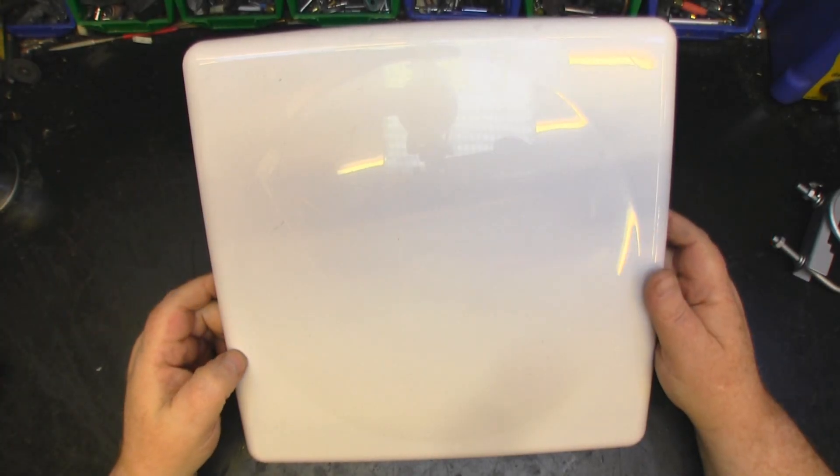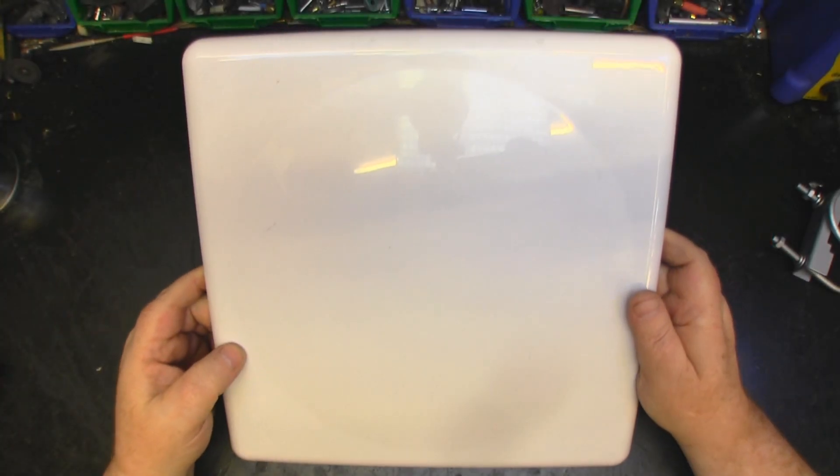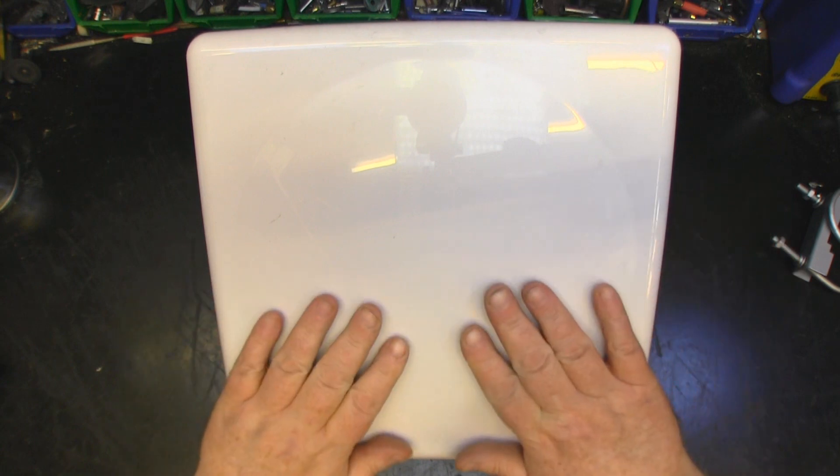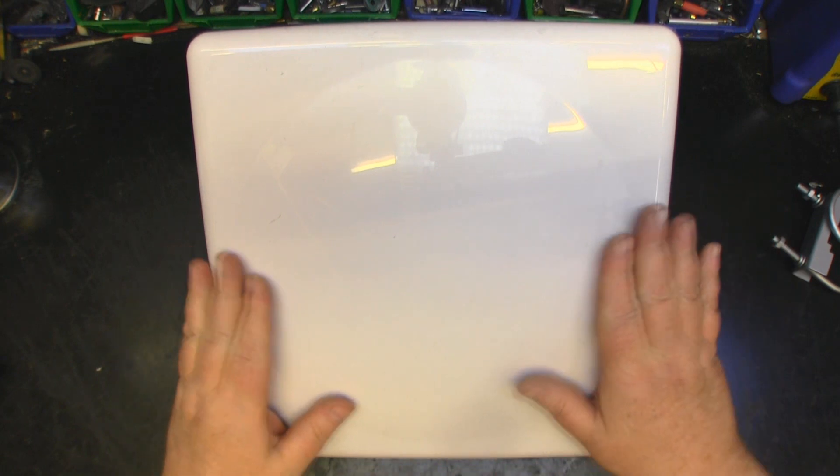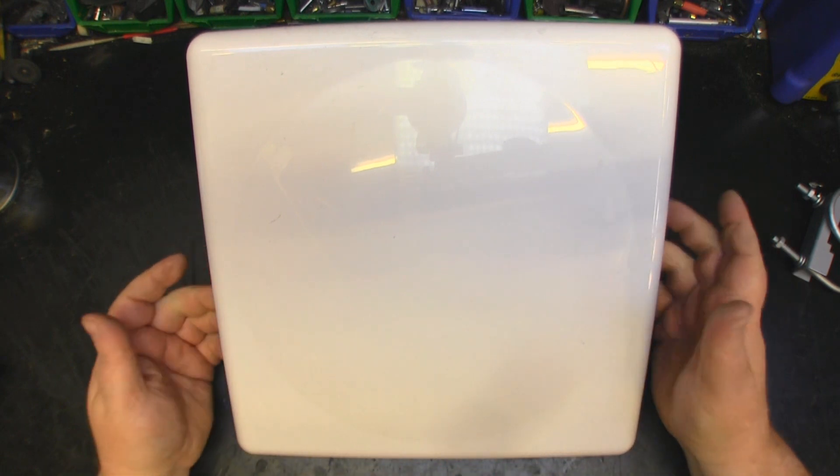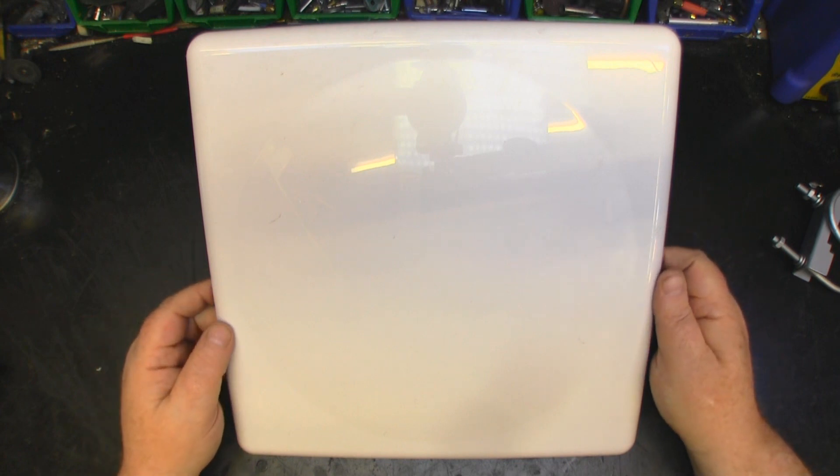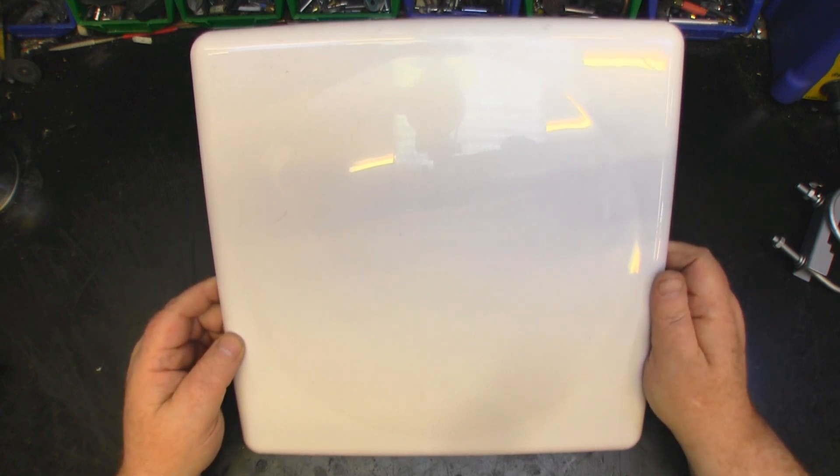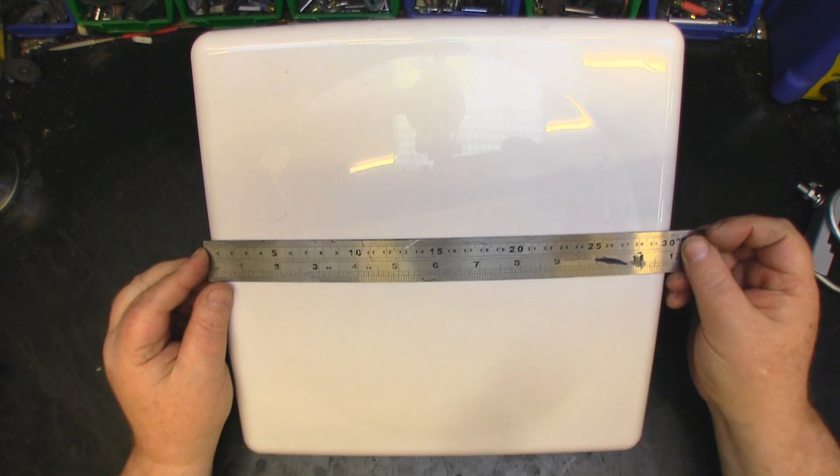I've got a bit of a beast on the bench for us to take a look at today. It's an unknown antenna I picked up off eBay from a seller who has a few of these from an office environment. It's 300 millimeters by 300 millimeters square.